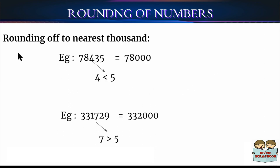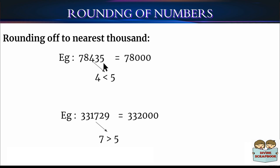Now let's talk about rounding off to the nearest 1000. To round off a number to the nearest 1000, we compare the digit at the 100's place with 5. If the digit in the 100's place is less than 5, we replace the digits in the 100's, 10's, and 1's place by three 0's. For example, 78,435 has 4 in its 100's place and 4 is less than 5, so it rounds to 78,000.